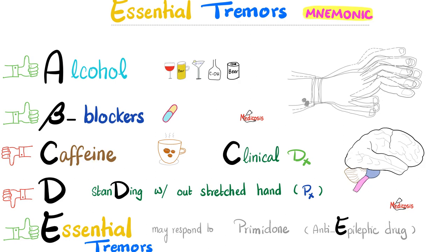Third: caffeine makes these tremors worse, which actually makes sense. Tremors could mean your nervous system is overly active. Alcohol is a known sedative and hypnotic — it makes your brain lazy, inhibits brain activity, and therefore inhibits the tremor.